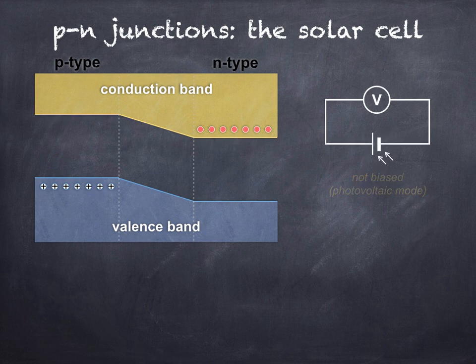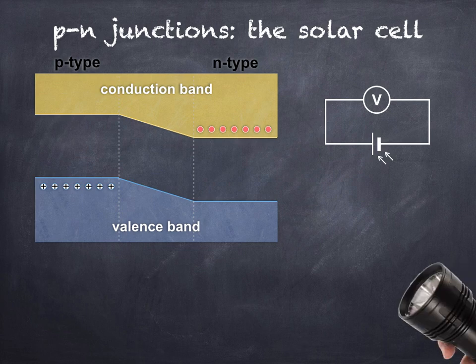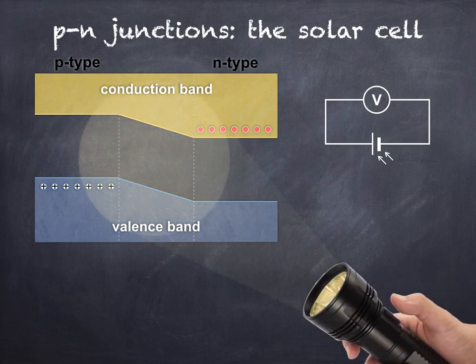Looking at the circuit diagram, you'll see the symbol for a solar cell with a voltmeter connected across it to measure the output voltage, or EMF. The question is, though, how does it work?